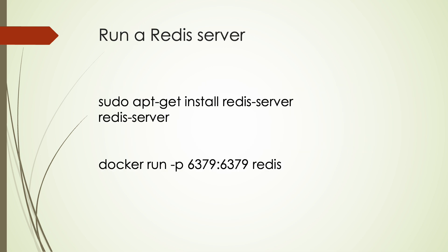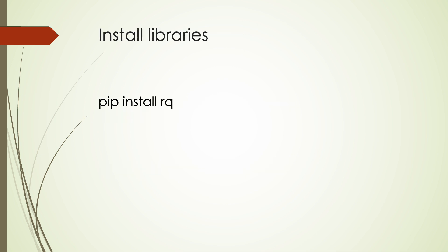RQ uses Redis as a message broker, so you need to have a Redis server running. If you don't have Redis installed, you can install it directly on your computer or run it with Docker, which is recommended for local development and study purposes. To use RQ, we just need to install the RQ package with PIP or any other package management tool, preferably in a virtual environment. Note that the Redis package is also required and will be installed automatically with RQ.